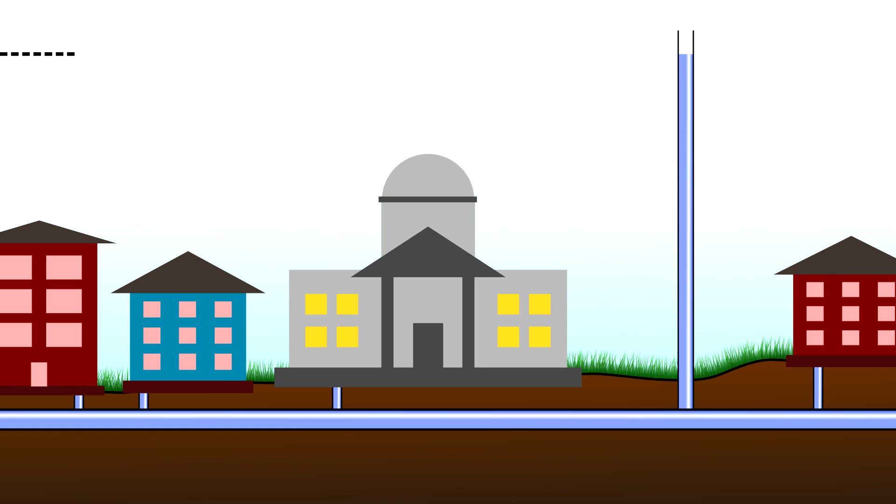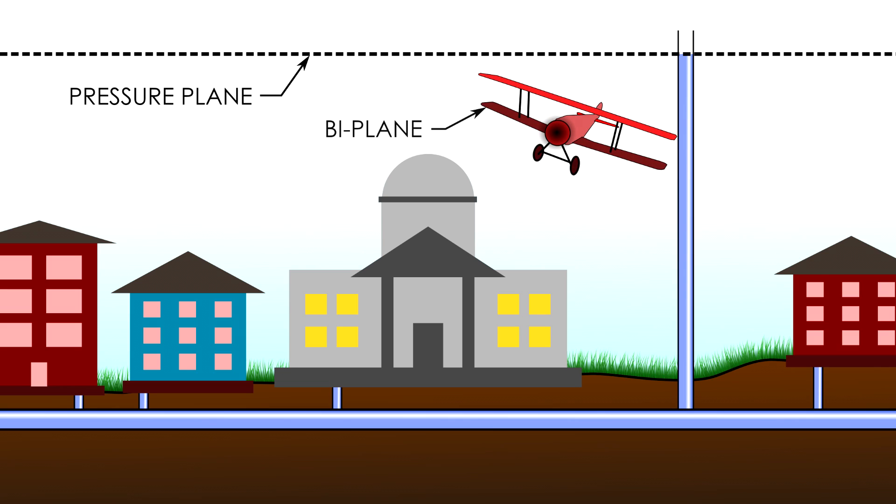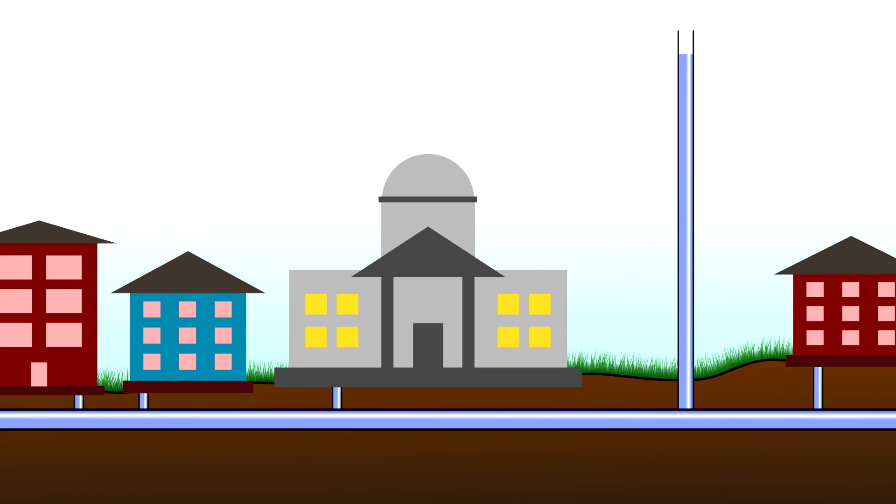In fact, if you could do this at every point in a city and connect all the points, you'd have what we call a pressure plane. An imaginary surface, almost like a comforting blanket, hovering above our heads representing the water pressure at any location.